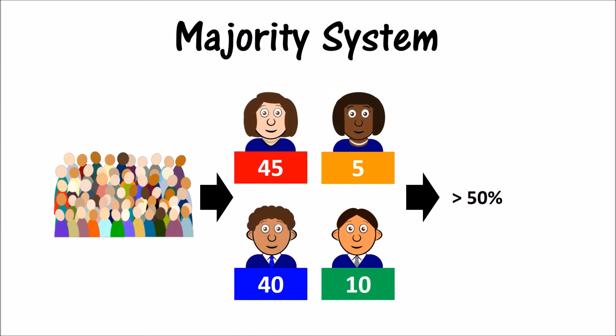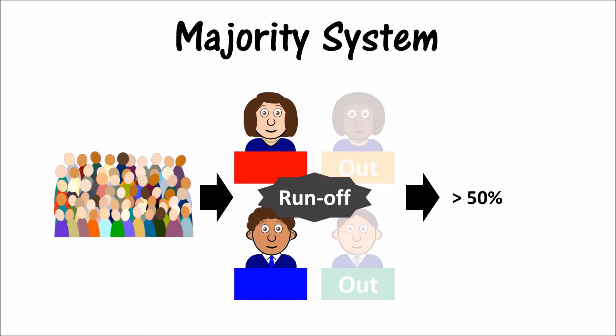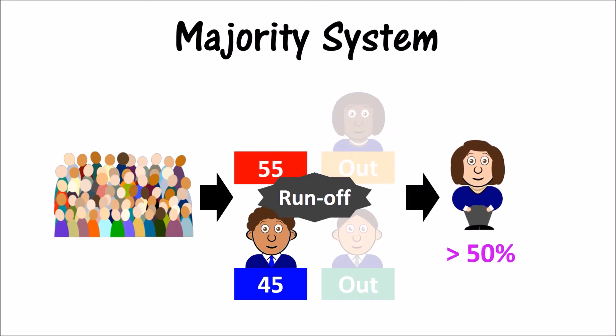For an election in which no candidate gets a majority, another step is required. There are many ways to determine what happens next, but let's say this example has a runoff scenario in which another election occurs between the top two candidates only. Another vote is held, and the odds are that when there are only two candidates in the race, one will earn a majority and win the election.